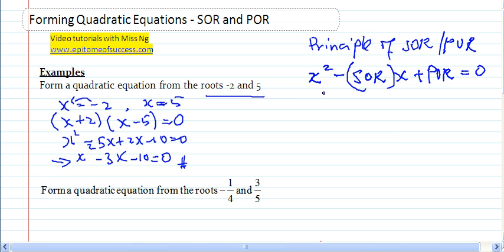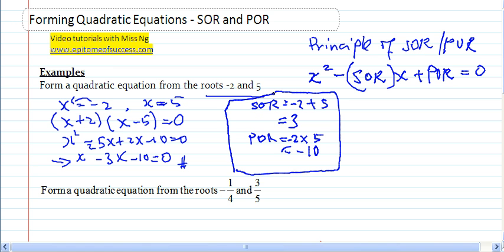So how do you do this then? You can actually, from the root, find your SOR. Okay, that would be negative 2 plus 5, so there will be 3. So then from the roots, find your POR. There will be negative 2 times 5, and that will be negative 10. So then once you have found this, what you need to do is just to put this into this form, this equation here.